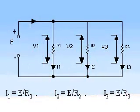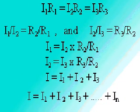Let's next look at branch currents flowing through the individual resistors. Each of the resistors in a parallel circuit constitutes a path for current flow, and each of these paths is called a branch. Using Ohm's law, we see that I1 equals E divided by R1, I2 equals E divided by R2, and I3 equals E divided by R3. By substitution, we see that I1·R1 equals I2·R2, which equals I3·R3. Further substitution results in I1 divided by I2 equals R2 divided by R1, and I2 divided by I3 equals R3 divided by R2.